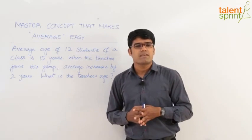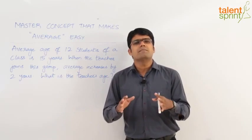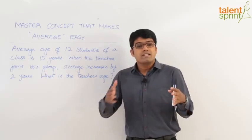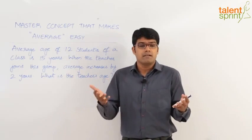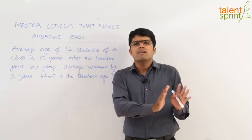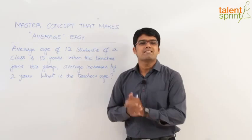What does the question say? Average age of 12 students of a class is 15 years. Now going by our logic of equal distribution, it simply means that each of the 12 students here is 15 years old. Now their actual ages may be different, but for our understanding to be easy, each student here is 15 years old.